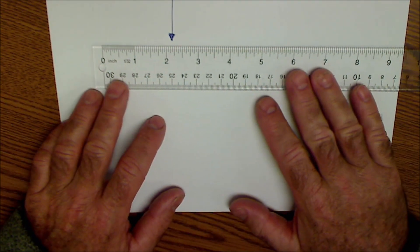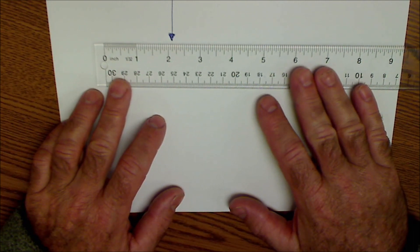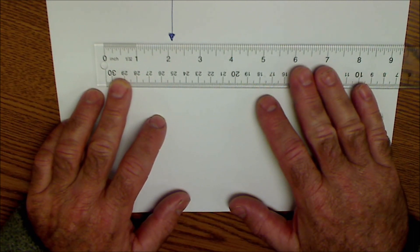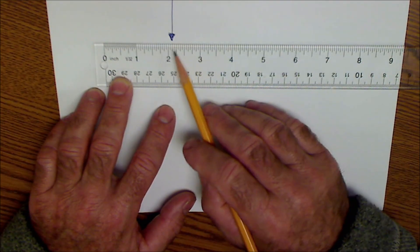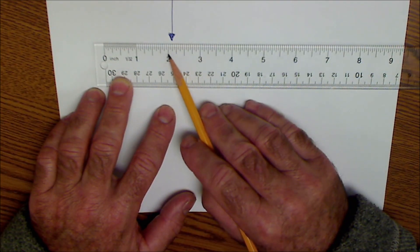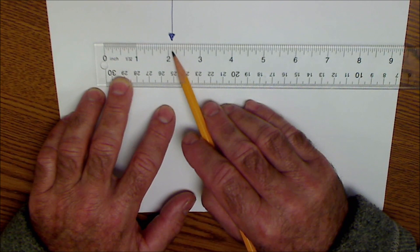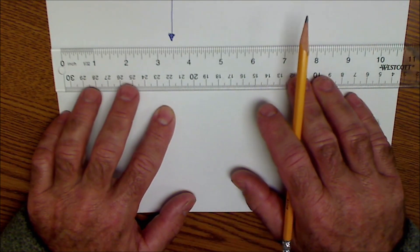So what I'm going to do right here is I'm going to line that up to a certain mark like right there. Now you call out the measurement and then I'll say it. So I'll give you a second to say it and then I'll say two and one eighth. This is an eighth because it's two marks after the two, or two sixteenths which is one eighth.